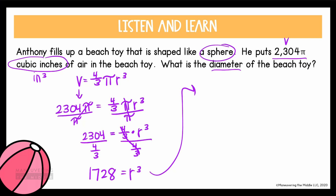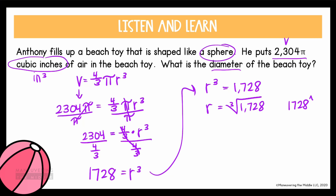So now we have: the radius cubed equals 1,728. The inverse operation of cubing is taking the cube root. So the radius equals the cube root of 1,728 — that's the number which, multiplied by itself three times, gives 1,728. Using a calculator, you can raise 1,728 to the power of one third. The cube root of 1,728 is 12. But always go back to the question — it asked for the diameter. The diameter is double the radius, so the diameter is 24 inches.